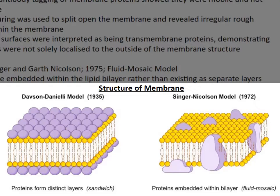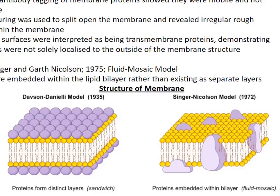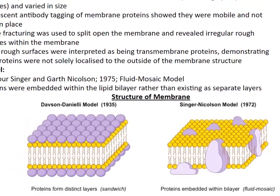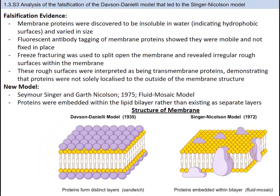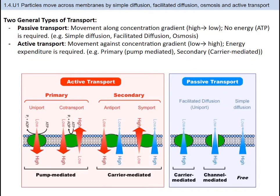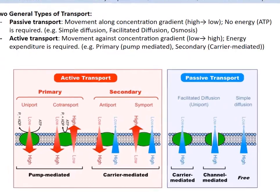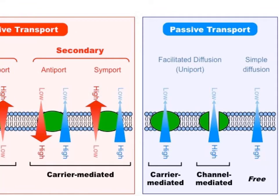That brings us to the end of 1.3. Now that we know about the structures and functions of the cell membrane and that it is considered a fluid mosaic, we know that molecules move across the membrane. There are two general methods of transport: passive transport and active transport. Passive transport is the movement of molecules along the concentration gradient, from high to low. In this case, molecules move in the path of least resistance, and no ATP — which is energy — is required.